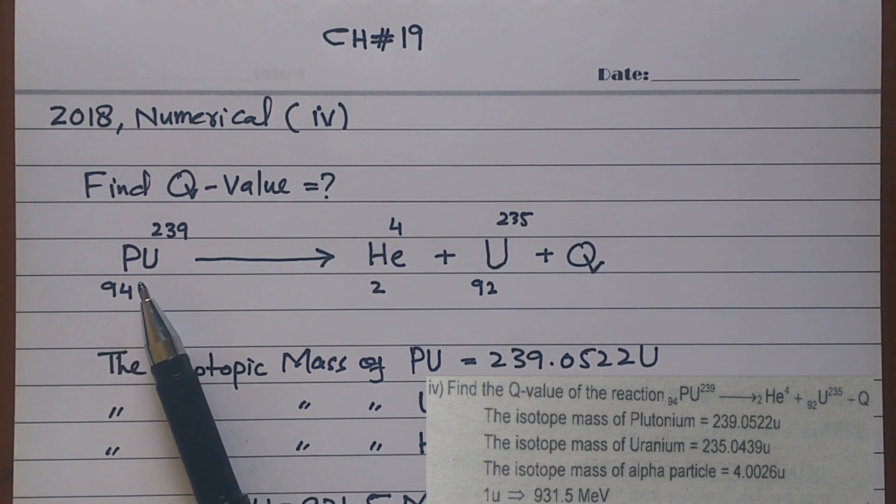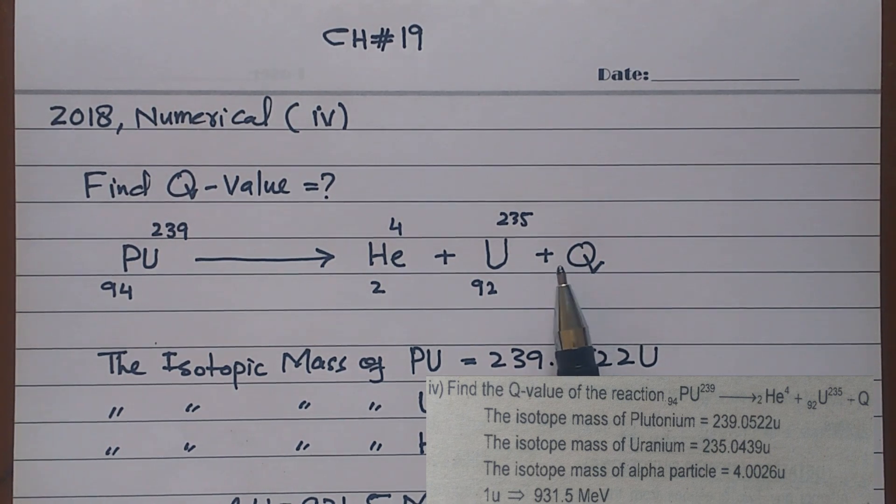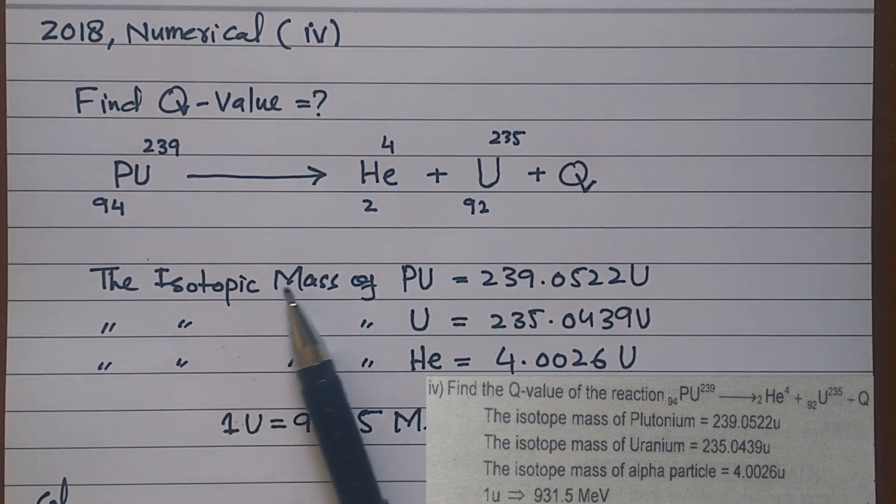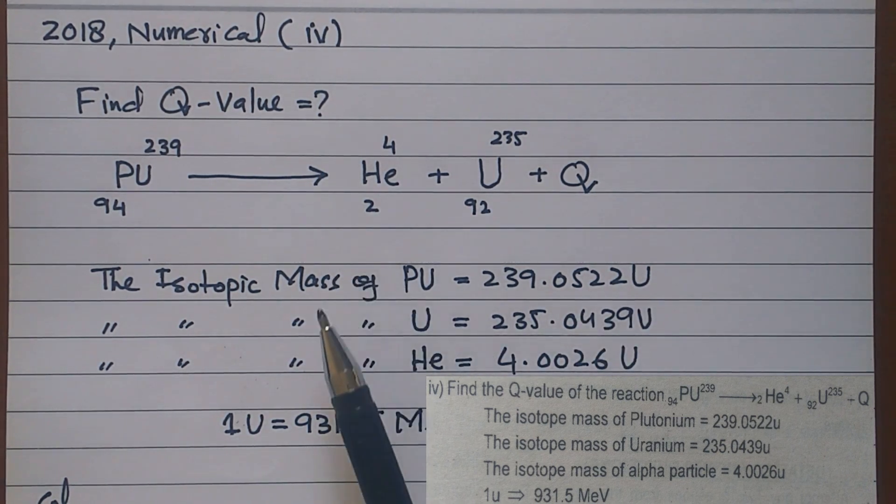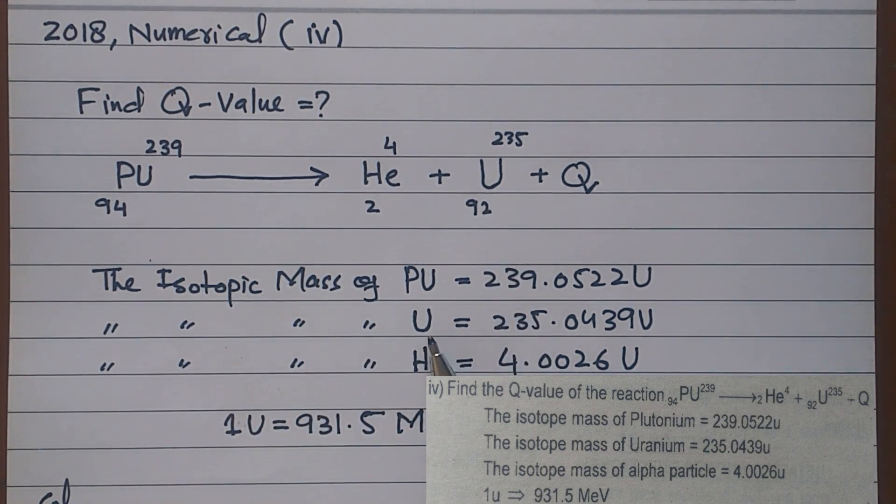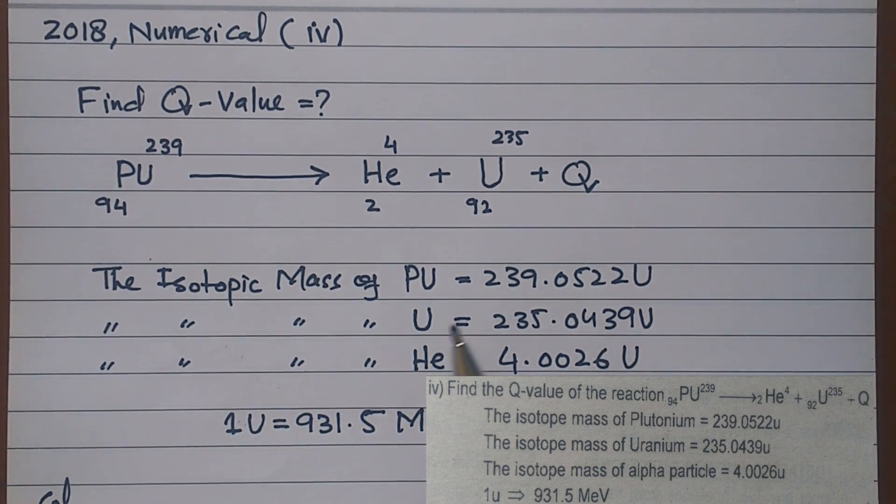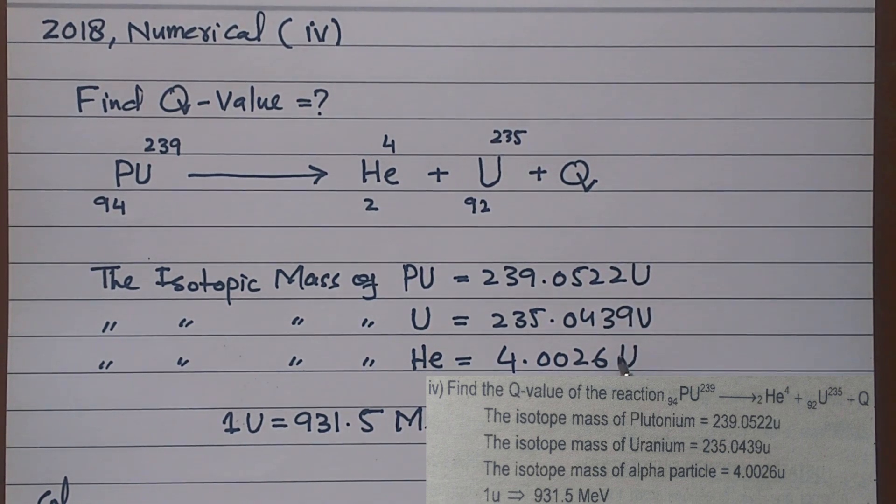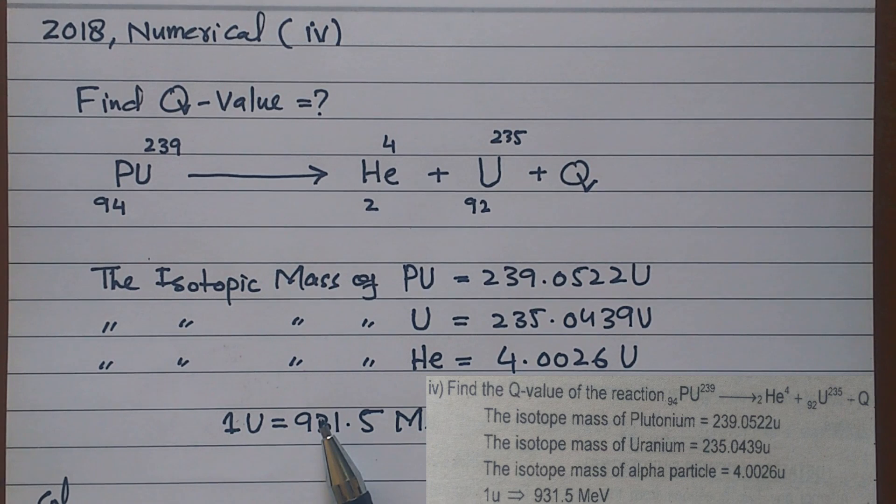Basically, when there is a disintegration, the energy is released by the Q-value. The plutonium is given by the unified atomic mass unit. The isotopic mass of uranium and the isotopic mass of helium, which we call alpha particle, are also given in unified atomic mass units.